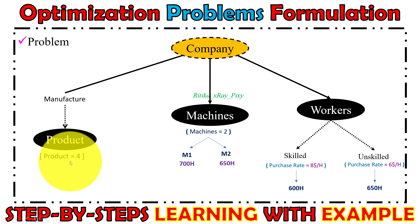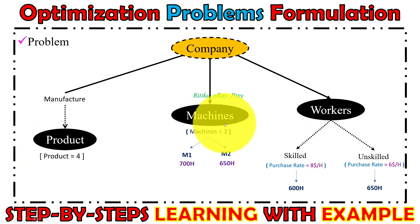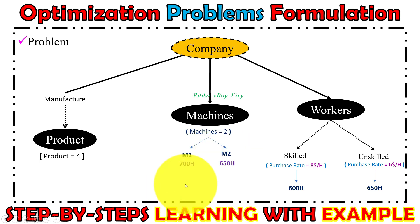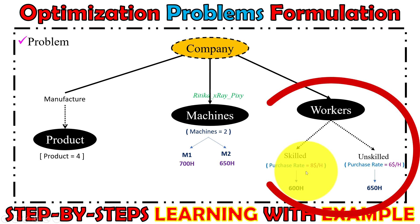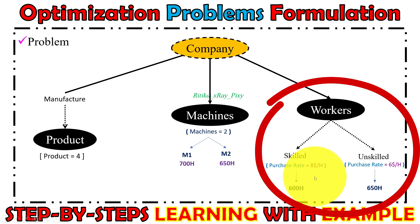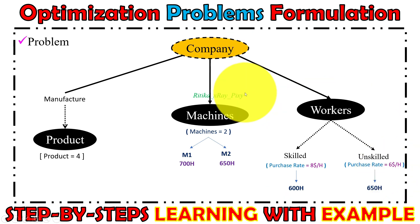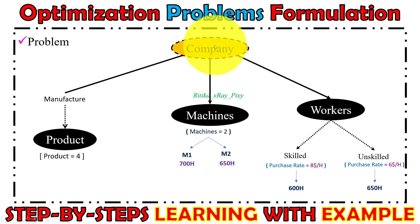So here we have a company that manufactures products: four products, two machines, and two types of workers. Each month, machine one is free to use for 700 hours and machine two for 500 hours. The company can purchase up to 600 hours of skilled workers at $8 per hour and 650 hours of unskilled workers at $6 per hour. This is a maximization problem, as the company wants to maximize its profit.